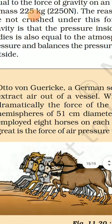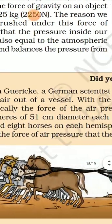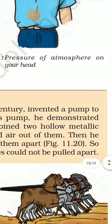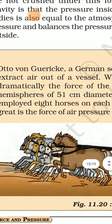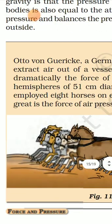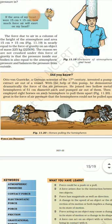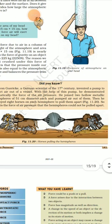Did you know? Otto von Guericke, a German scientist in the 17th century, invented a pump to extract air out of a vessel. With the help of this pump, he demonstrated dramatically the force of air pressure. He joined two hollow metallic hemispheres of 51 centimeters diameter. He pumped the air out of them, then employed eight horses on each hemisphere to pull them apart, figure 11.20. Such is the force of air pressure that the hemispheres could not be pulled apart.